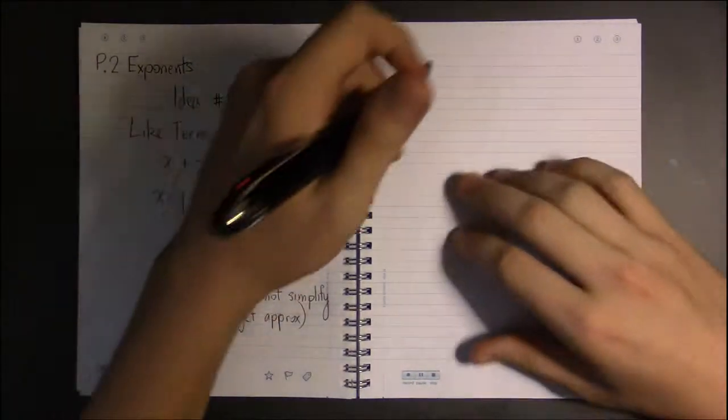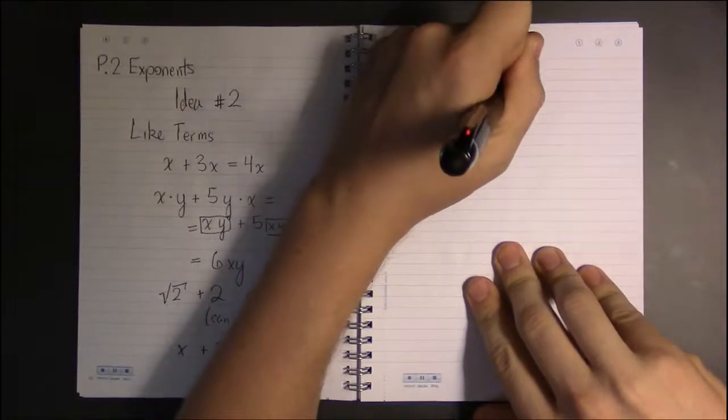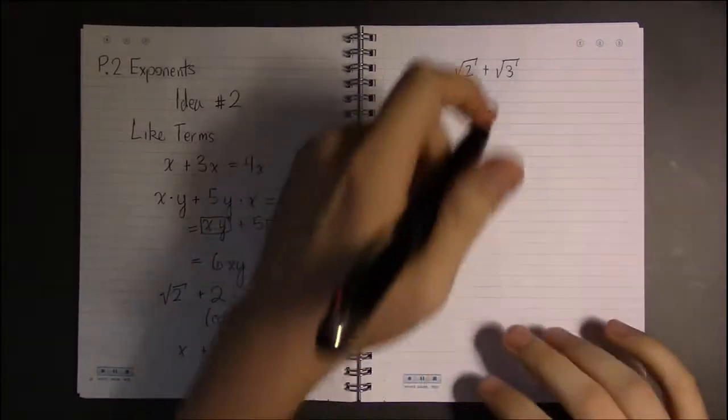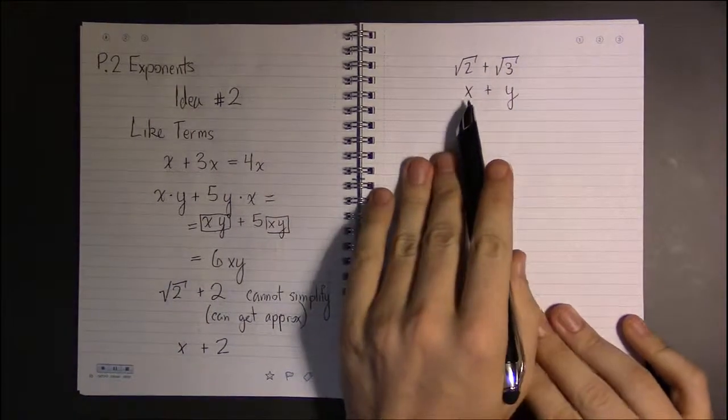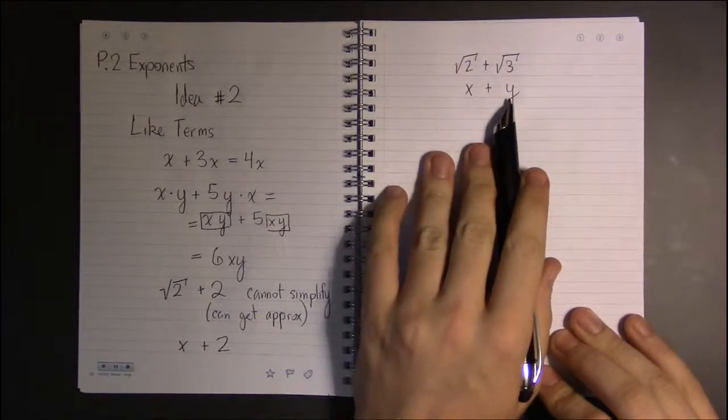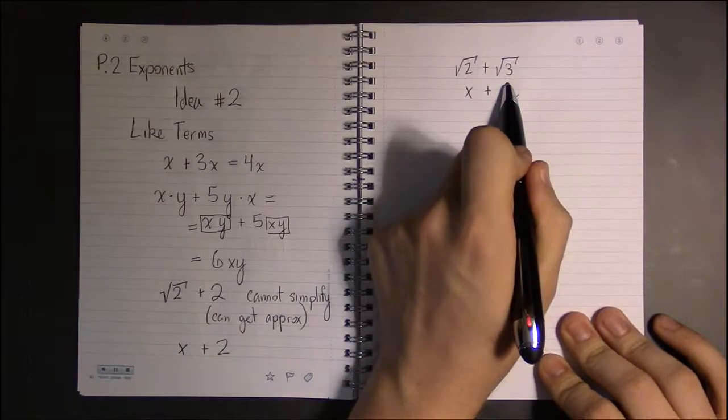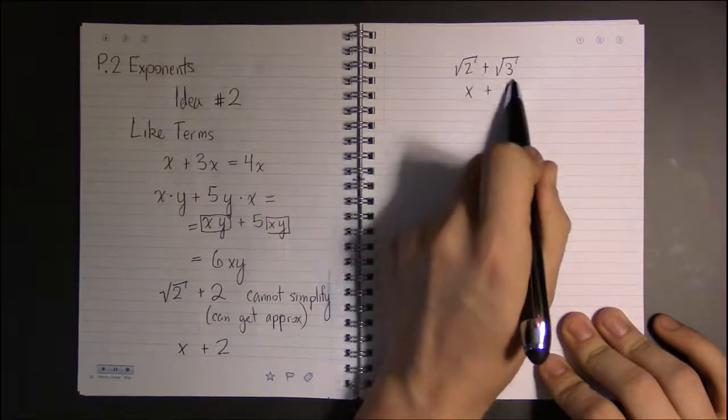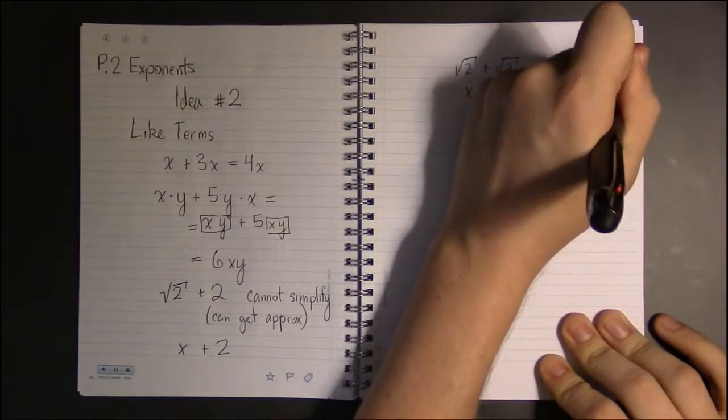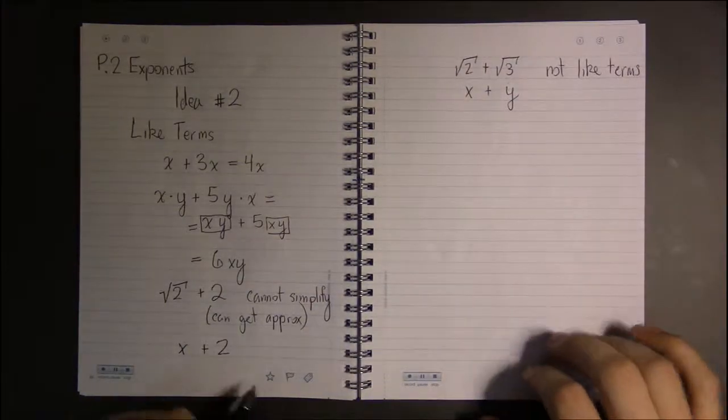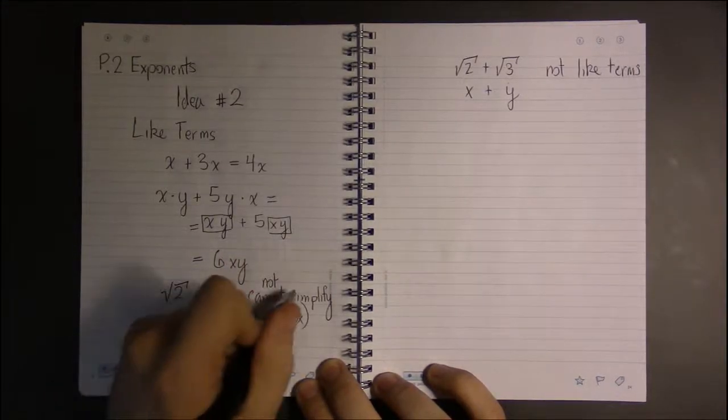But it works as well for something like square root of 2 plus square root of 3. This is like saying x plus y, one unknown number plus another unknown number. I don't know, third unknown number. So these two are not considered to be like terms because we really can't combine them any further. Can't simplify, so not like terms.